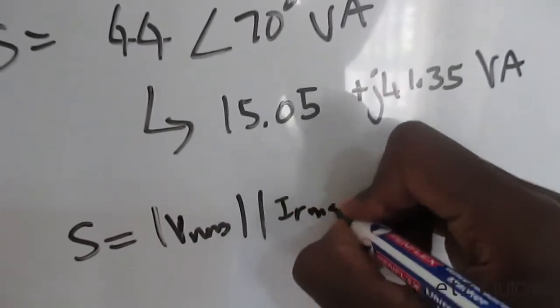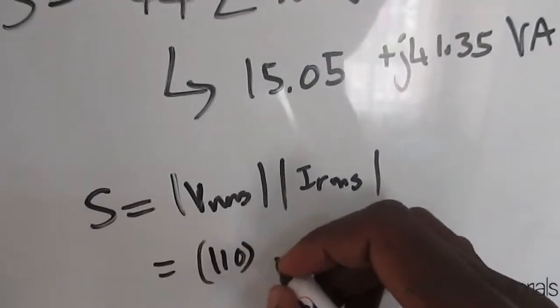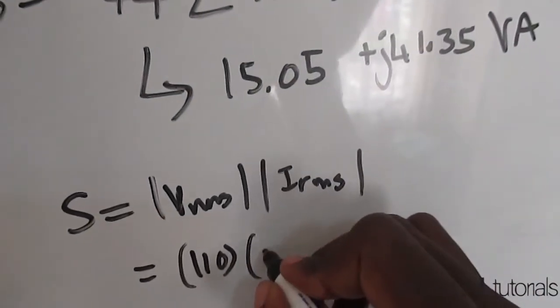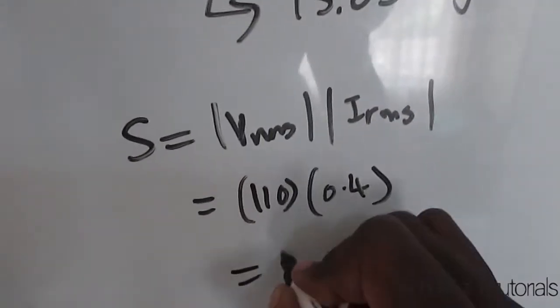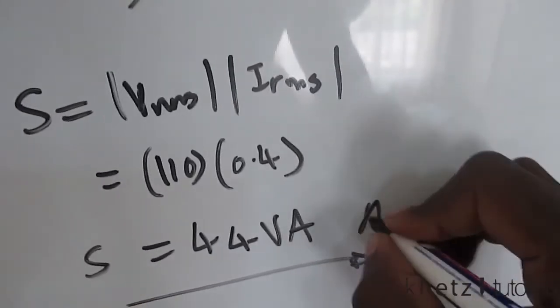These two have the same symbol, but now the apparent power we are interested in the magnitude of these values. So basically we're going to say 110 multiplied by 0.4. The answer to that should be 44 volt amperes - that is your apparent power.